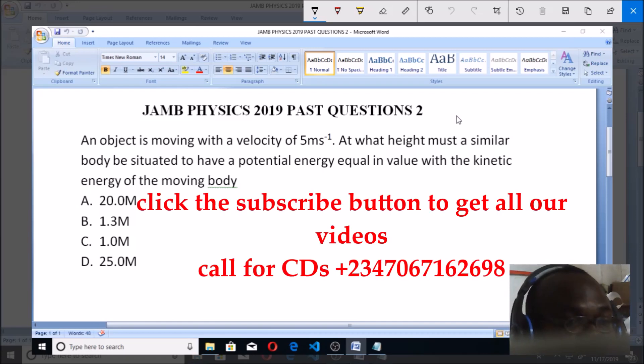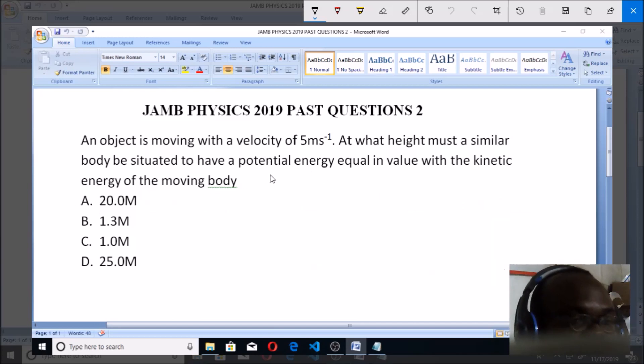Option A: 20 meters, B: 1.3 meters, C: 1.0 meters, D: 25 meters. To understand this, you can look at it as energy conversion. We're looking at potential energy being equal in value to kinetic energy. The formula for potential energy is mgh, whereas the formula for kinetic energy is ½mv².